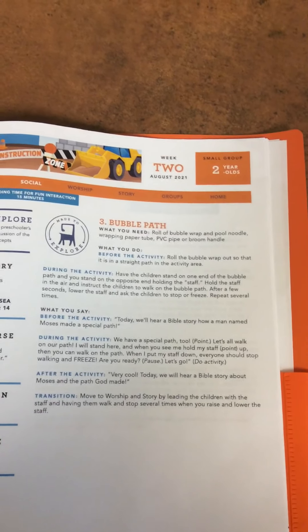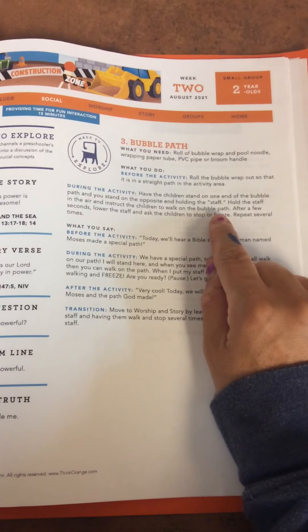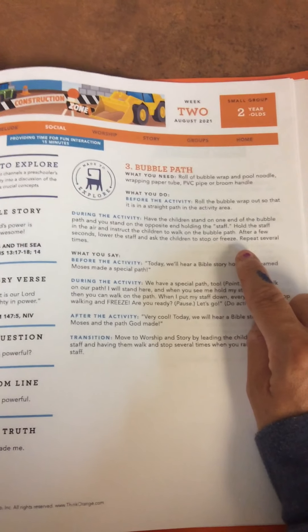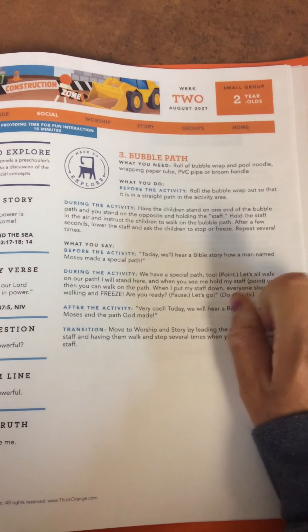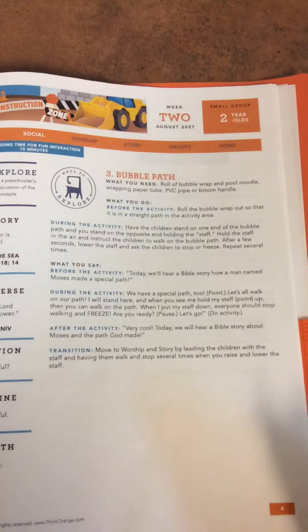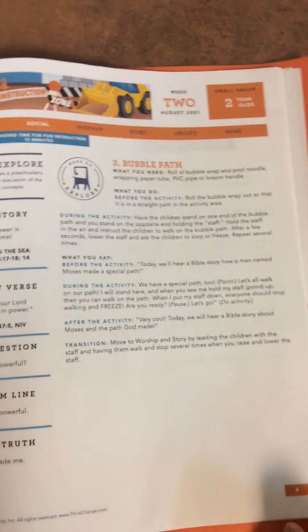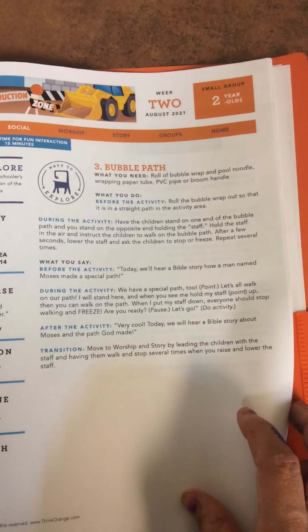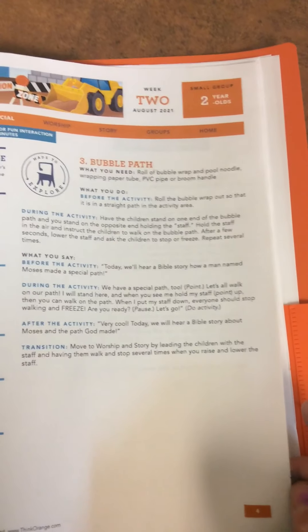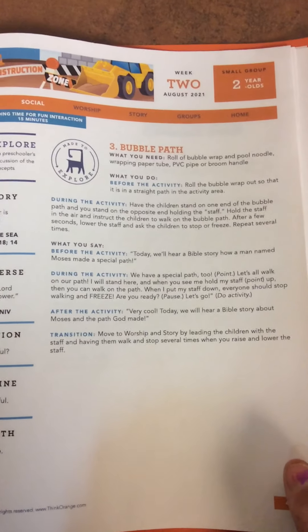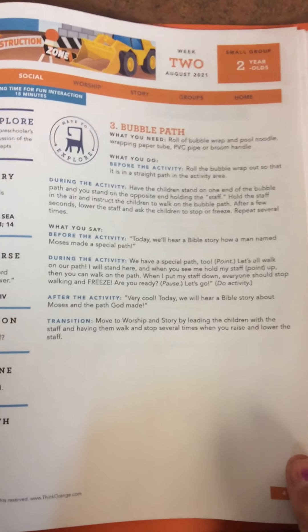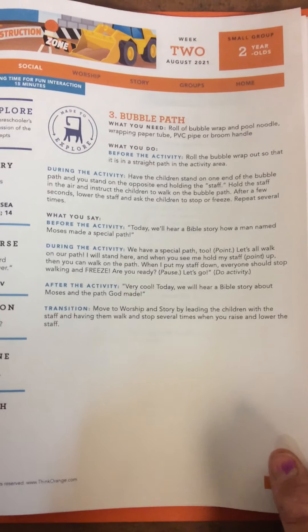Another pre-large-group activity is called Bubble Path. We have a big line of bubble wrap and a noodle up here. Have the kiddos stand on one end of the bubble path, and you stand on the opposite end holding the staff — which is the noodle — in the air. Instruct kids to walk on the bubble path; after a few seconds lower the staff and ask the kids to stop, then repeat. Say: today we'll hear our Bible story about a man named Moses who made a special path, and we have a special path too. When you see me hold my staff up, you can walk; when I put it down, everybody freeze. End by saying: today we're going to hear a Bible story about Moses and the path that God made. You can either have them swim like fish to large group, or walk-and-freeze using the staff.